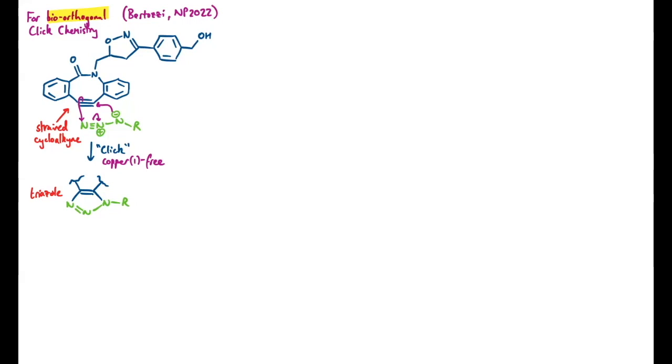Just having a look at some of the other features here, the alkyne is flanked by these aryl groups. Now they're there to increase the strain on the alkyne by making that 8-membered ring really sp2 rich, so forcing bond angles of 120 degrees and preventing puckering. We also have an amide at the top, which will also go some way to increase strain on the alkyne.